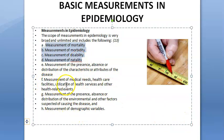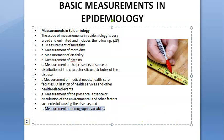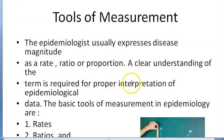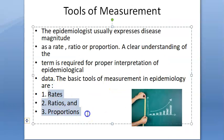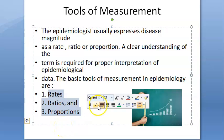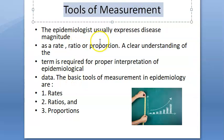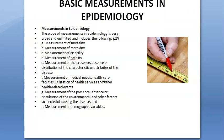Measurements in epidemiology include mortality, morbidity, disability, natality, and medical needs of society, as well as demographic variables. The tools for measurement are only three: rates, ratios, and proportions.